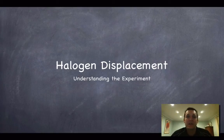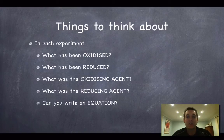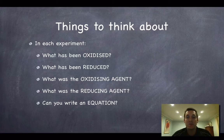Hello, and welcome to the second of the practical films from the Redox Topic. This one's not about metal displacement anymore, it's about halogen displacement, but once again it's really just designed to help you understand what was going on in the experiment and perhaps highlight some of the observations you might have missed. So perhaps while we're going through these experiments, it would be a good idea to be thinking about what's been oxidized and reduced, what the oxidizing agent and the reducing agent were, and also whether you can write equations for the reactions.